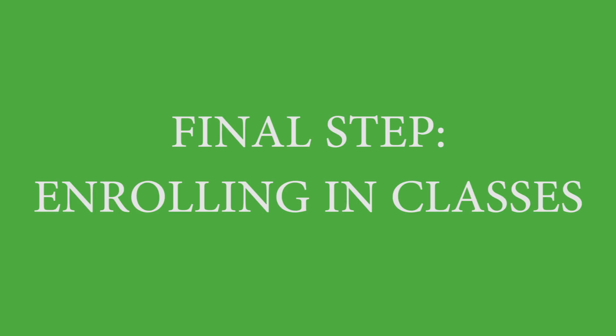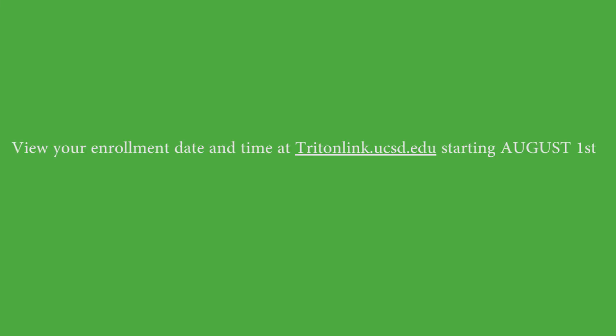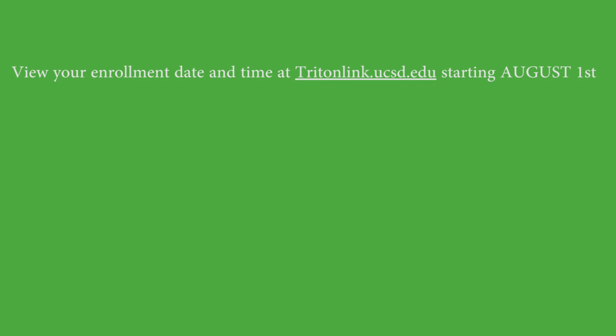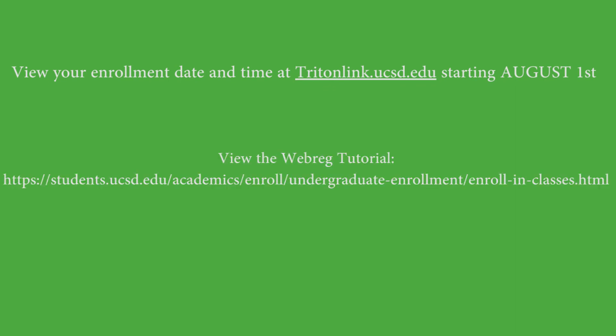Now that we have cleared up some frequently asked questions and you are aware of how to find your course recommendations for fall quarter, let's move to your final step, which is enrolling in classes. Starting August 1st, you will need to log in to tritonlink.ucsd.edu to view your assigned enrollment date and time. Make sure to set this date in your calendar so you don't forget. Another important tool to view prior to your enrollment date is the WebReg tutorial. This is an important tool to help you become familiar with UCSD's online enrollment process.